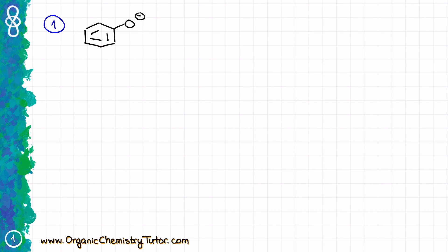So the first example that I have over here, the very first thing that I want to do is to make sure that I have all implicit electron pairs on this molecule, and I have three electron pairs on the oxygen. This is a type of resonance where I have the electron pair on the oxygen, and that electron pair is going to be right next to a pi bond. So this is what I would classify as an electron pair plus a pi bond resonance. The first thing that I am going to do is I will take the electrons from the oxygen and push them towards my pi bond.